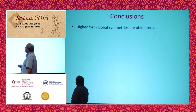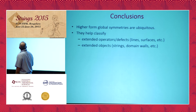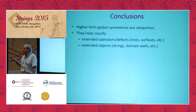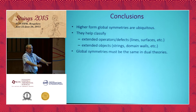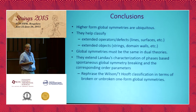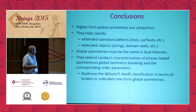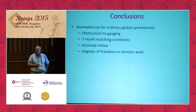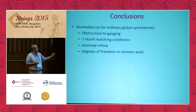To conclude: high-form global symmetries are ubiquitous, with many examples in different numbers of dimensions — I only scratched the surface. They help us classify operators and defects, which are extended objects: lines, surfaces, etc. The charged objects exist only if the symmetry is not broken, and these are strings and domain walls. When we have duality, these symmetries must be the same on both dual sides — a highly non-trivial test of duality. I've discussed the extension of Landau's characterization of phases, showing that the Wilson and 't Hooft story is really about spontaneous breaking of higher-form symmetries. I also mentioned anomalies as an obstruction to gauging, with the consequence of the 't Hooft anomaly matching condition and anomaly inflow on domain walls — much like ordinary anomaly inflow but for higher-form symmetries — requiring degrees of freedom on the walls.